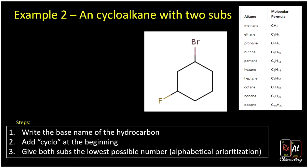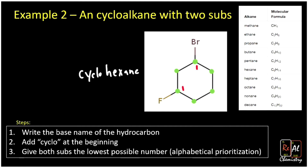Here we have another cyclohexane with six carbons, so once again we're going to start with cyclohexane. Our substituents give us some interesting features for naming. We want to give both substituents the lowest possible number. When I have a ring structure, I can start counting wherever I want. I obviously want to give one of my substituents the number one, so I want to put it either on the bromine or the fluorine. Here we use the alphabet to break the tie — bromine comes first, so we're going to give bromine the number one, and fluorine a different number.